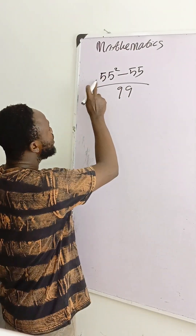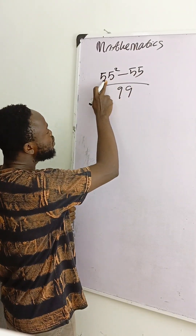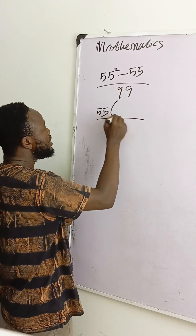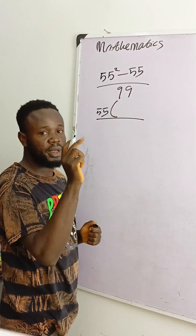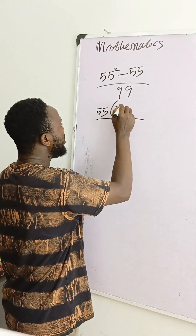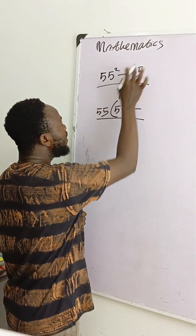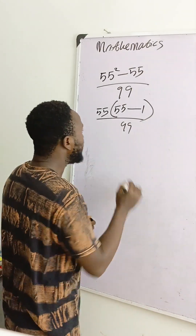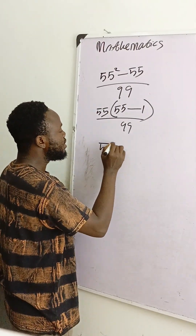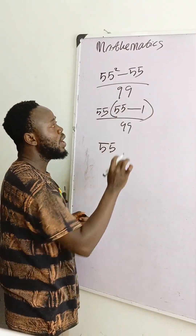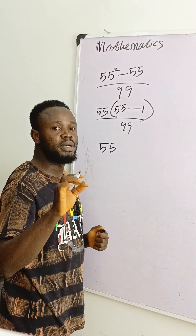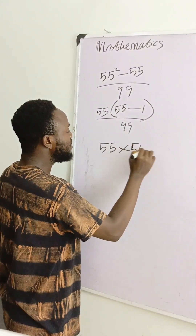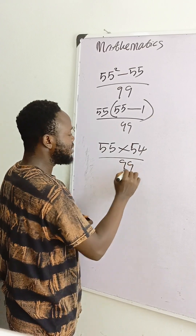At the numerator we have 55 squared times 55, so the common factor there is 55. If I use 55 divided into 55 squared, then 55 will remain — 55 divided by 55 is 1 — and I have 99. That means 55 minus 1 is 54, so I'll write times 54 over 99.